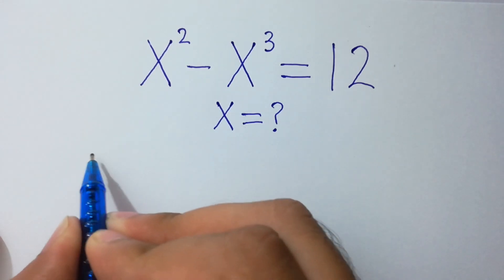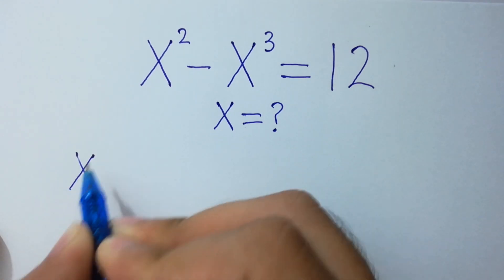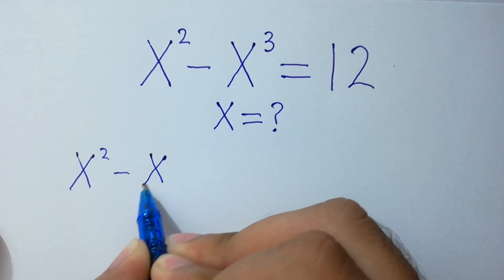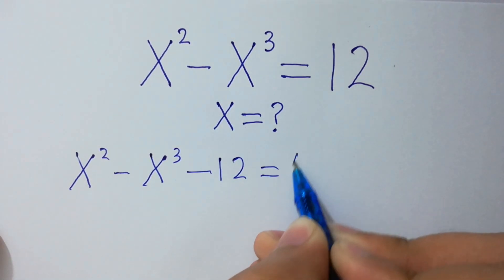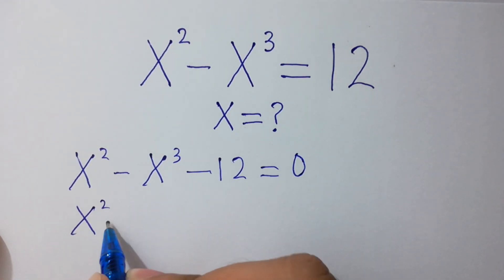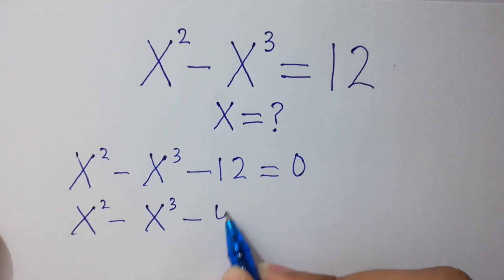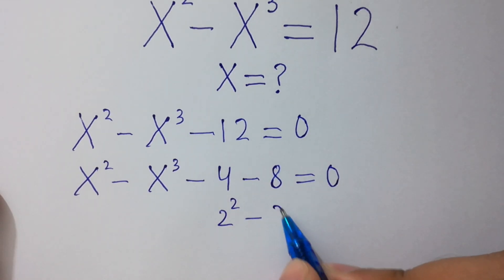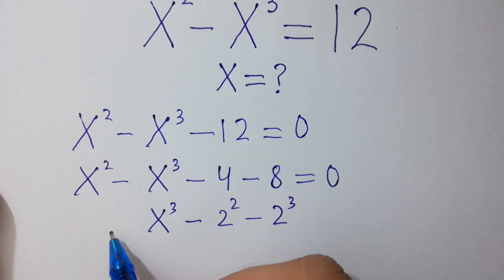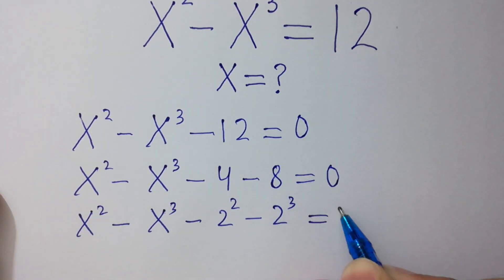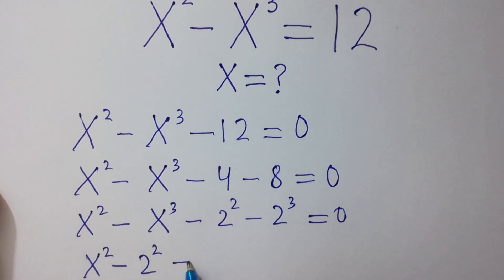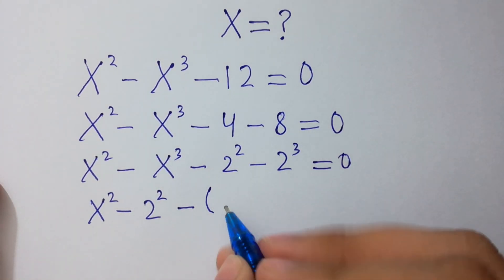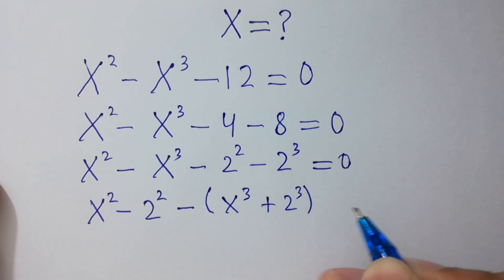First of all, we can write x squared minus x cubed minus 12 equals 0. Here, 12 can be written as 4 plus 8, where 4 is 2 squared and 8 is 2 cubed. So we have x squared minus 2 squared, minus bracket x cubed plus 2 cubed, equals 0.